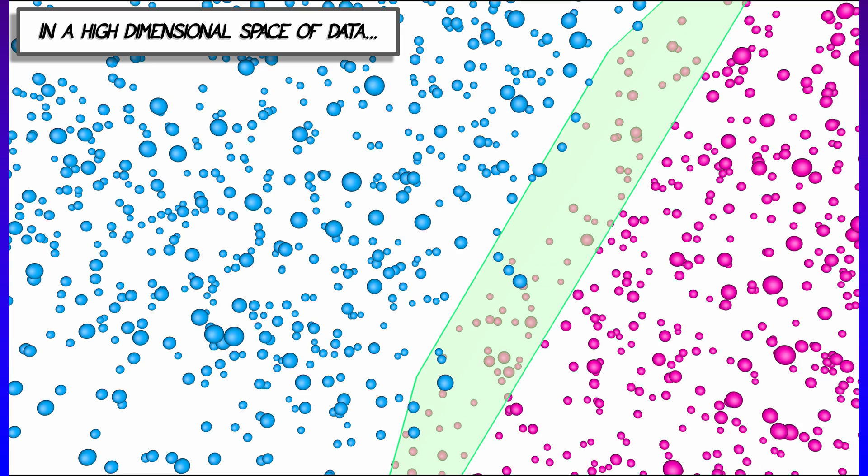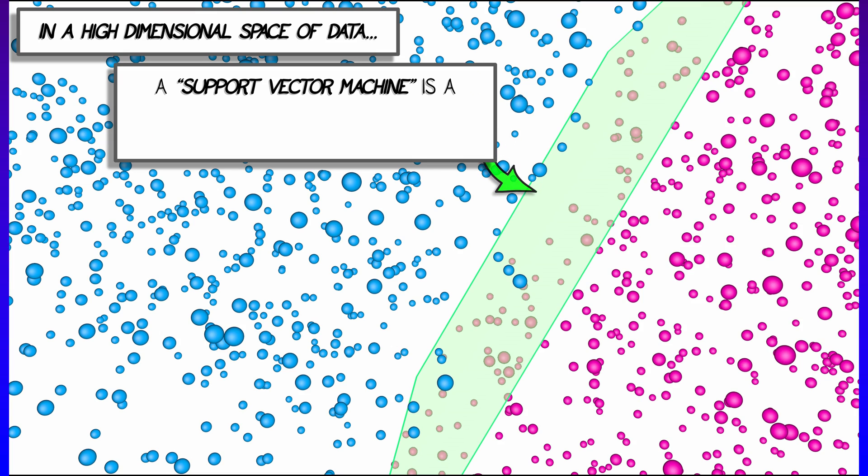Here's an example. Let's say you've got a high dimensional space full of data points. Let's say maybe a space of images. Then a support vector machine is the name for a hyperplane that separates one type of data point from another type of data point.